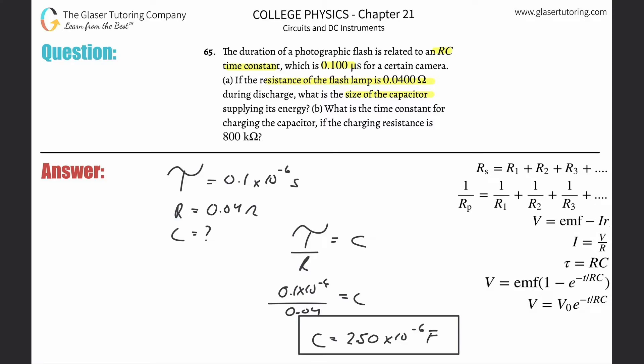And then part B. Now what is it saying? It's saying what is the time constant, so we got to solve for tau for charging the capacitor if the charging resistance is now 8 kilo-ohms. All right, so they're asking us for tau. We're given the new resistance.